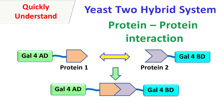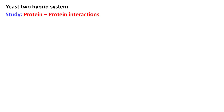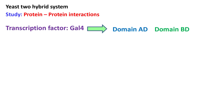Hey guys, quick biochemistry basics here. Let's talk about the yeast two-hybrid system. The yeast two-hybrid system is used to study protein-protein interactions. This system has been designed based on a transcription factor named Gal4, which has two domains.